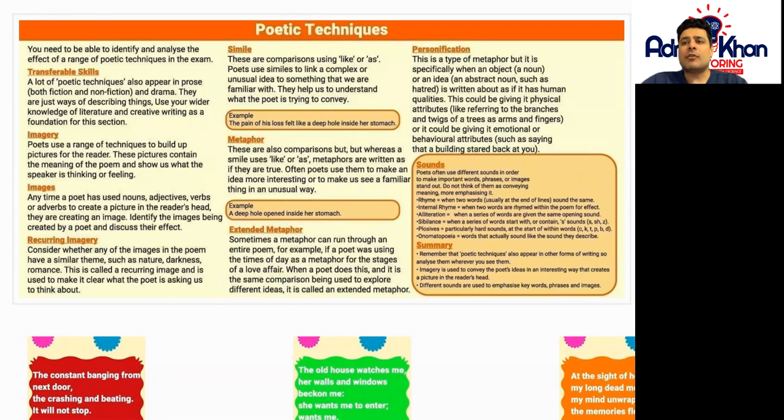Personification: It's a type of metaphor, but it's specifically when an object or an idea is written about in a human form or with human qualities. For example, referring to the branches and twigs of a tree as arms and fingers. It could have emotional and behavioral attributes as well.